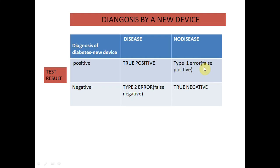In the next scenario, we have a different patient. We check the patient with the new device and it says the patient is healthy or not having diabetes. To confirm, we go to the gold standard test, and we find that this patient is actually diabetic. We got a false negative — the new device gave false negative information. The patient is diabetic but the new device said they are not diabetic. That is a Type 2 error.